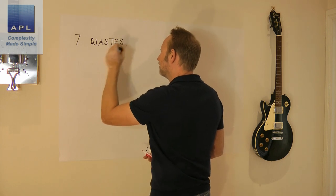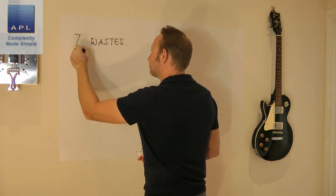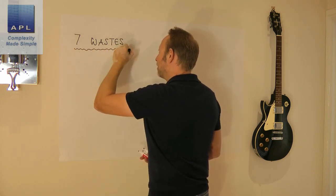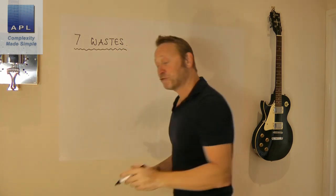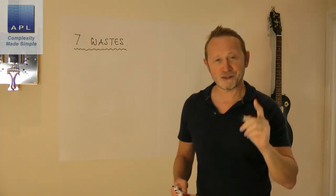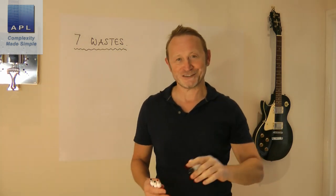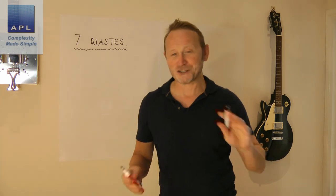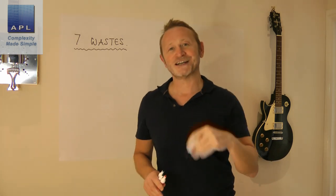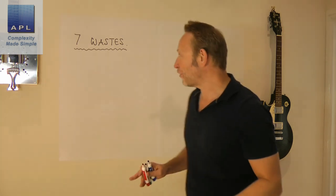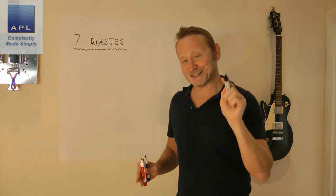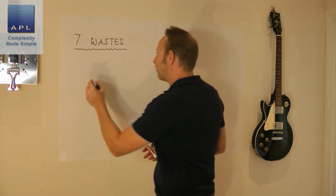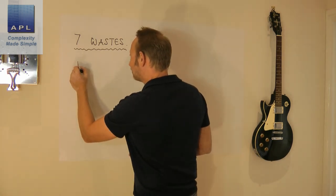We're going to take a look at the seven lean wastes. By the way, I will remind you there are only seven. Forget this eighth waste, ninth waste — it is complete nonsense because these seven wastes are about the product.